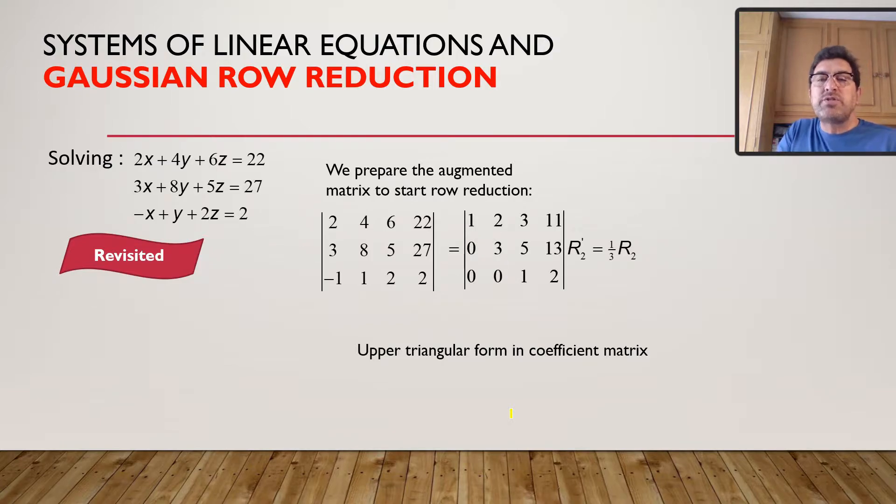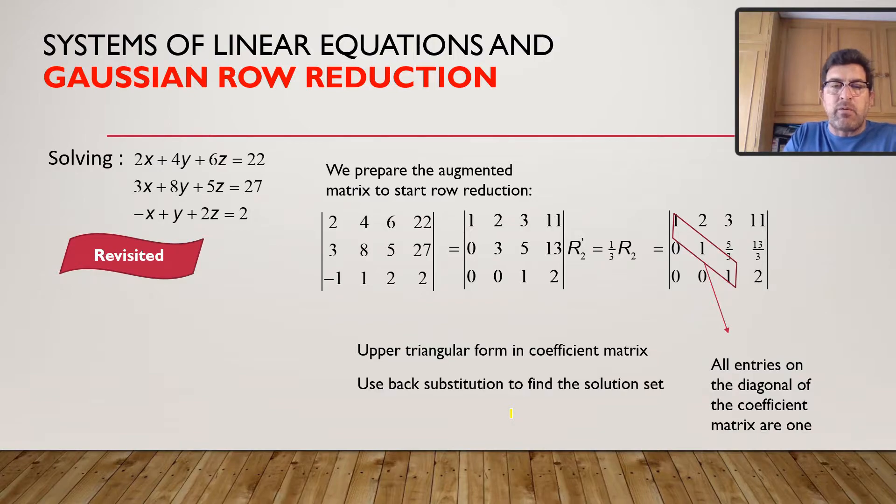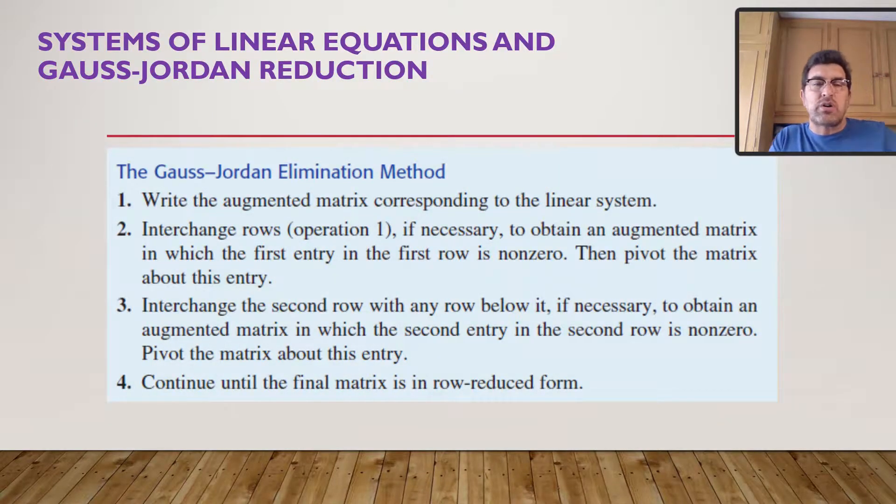What did we do then? We then did our row operations and what did we get? We get diagonal of one throughout our augmented matrix. All the entries on this diagonal must be one. We used back substitution to find the solution of this set. Very nice work that we've done there. Now, we're going to step it up a notch.